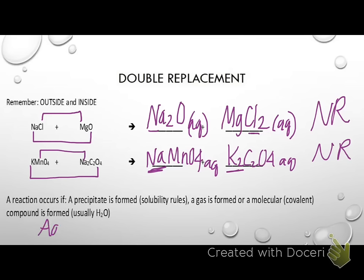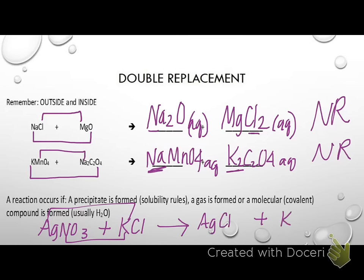Now let's do an example of one that actually happens. I'm going to do silver nitrate plus KCl. I do outside-inside and I get silver chloride and potassium nitrate. Potassium is a group one metal, so I know potassium nitrate is going to stay aqueous. But if I go look at chlorides, they are soluble unless they're with silver, mercury, or lead — and obviously I have silver here, so silver chloride would be solid. This reaction happens. If I needed to balance it, I would go ahead and balance it. Only balance if the reaction actually happens.